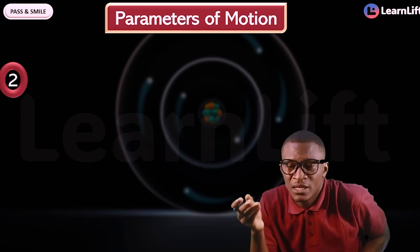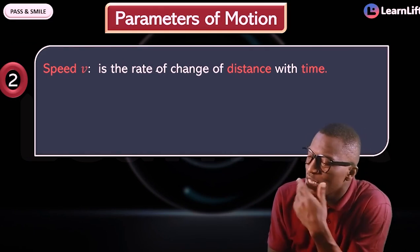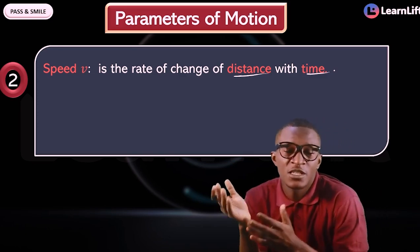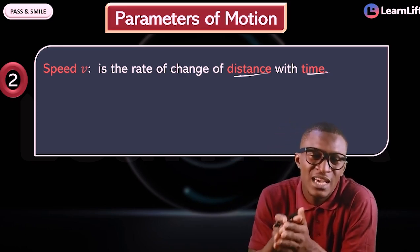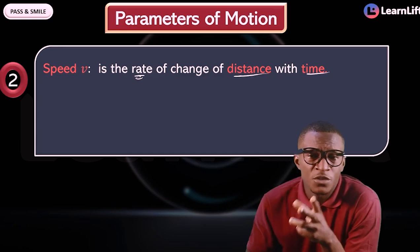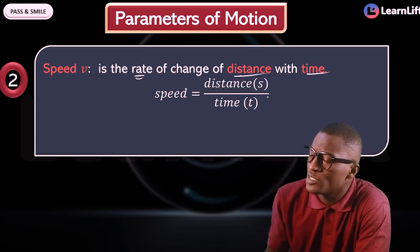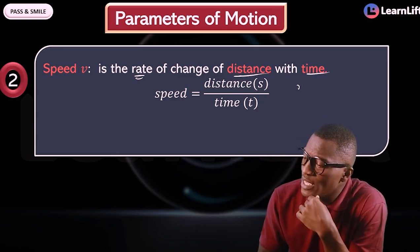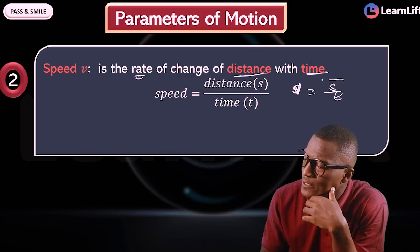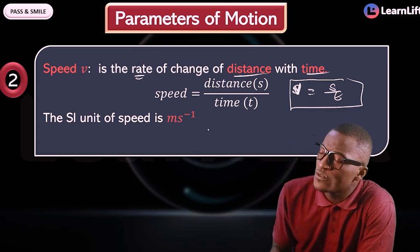The second parameter of linear motion is speed. Speed is the rate of change of distance with time. The formula is: speed = distance / time, or v = d/t. The unit for speed is meters per second, because distance is in meters and time is in seconds.